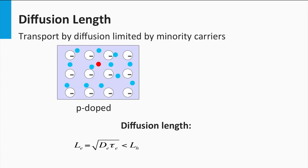Now let's consider a p-doped semiconductor material. The holes (the blue dots) are the majority charge carriers and the electrons (the red dots) are the minority charge carriers. Holes have a small probability of meeting an electron, so the recombination rate for holes is small. On the other hand, electrons have a high probability of meeting one of the holes, as the hole density is many orders of magnitude higher. This means the recombination rate for electrons is high — in other words, the diffusion length of the electrons L_e is shorter than that of the holes L_h.